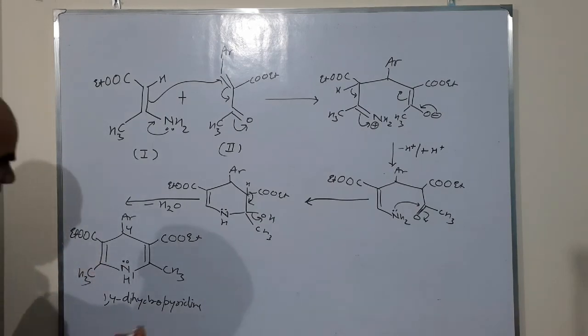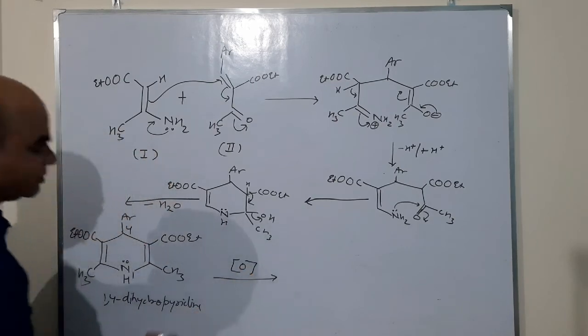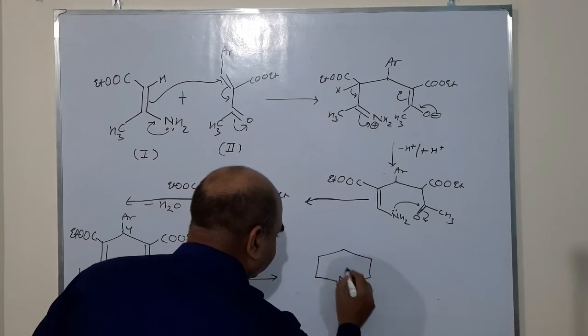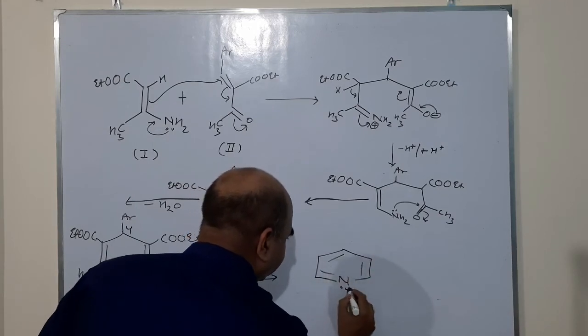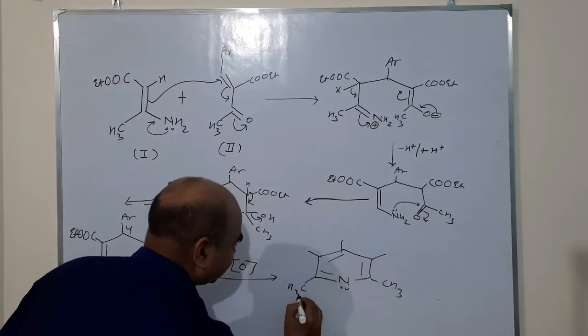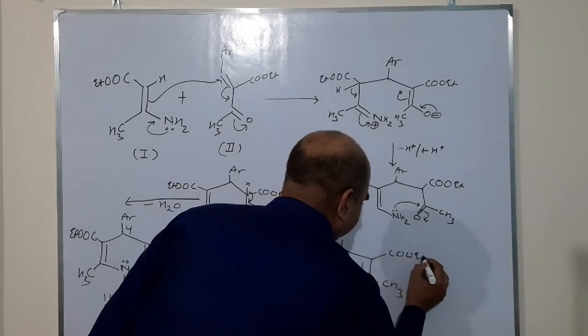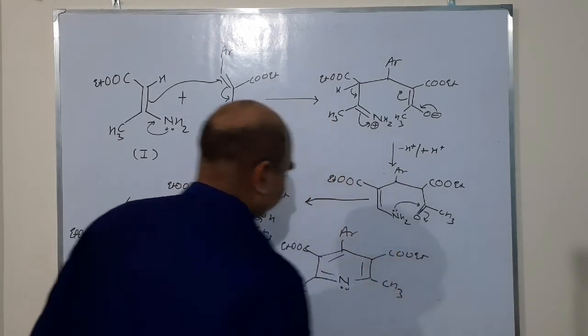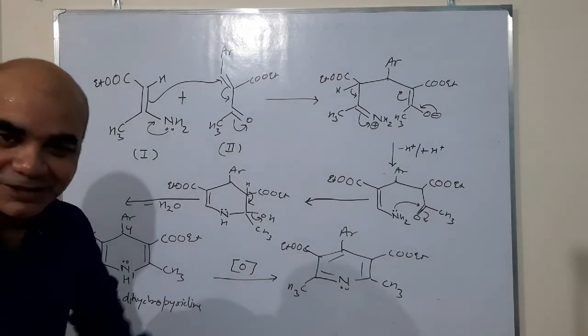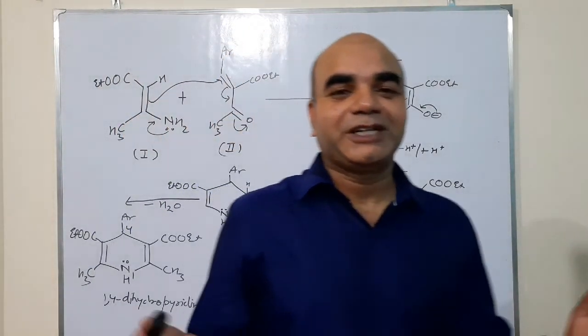Okay, and now it will oxidize to form CH3, CH3, COOEt, COOEt, Ar, and pyridine. So in this way we end up with the pyridine derivative, and this was all the mechanism of Hantzsch reaction.